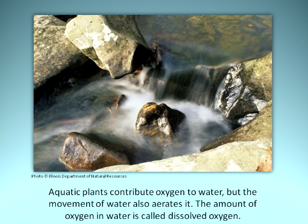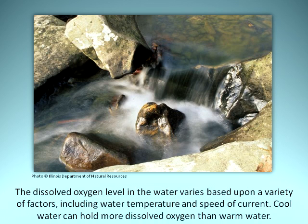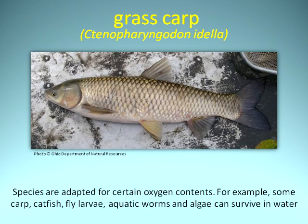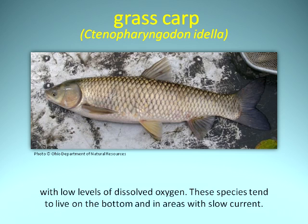Aquatic plants contribute oxygen to water, but the movement of water also aerates it. The amount of oxygen in water is called dissolved oxygen. The dissolved oxygen level varies based upon a variety of factors, including water temperature and the speed of current. Cool water can hold more dissolved oxygen than warm water. Species are adapted for certain oxygen contents. For example, carp, catfish, fly larvae, aquatic worms, and algae can survive in water with low levels of dissolved oxygen. These species tend to live on the bottom and in areas with slow current.